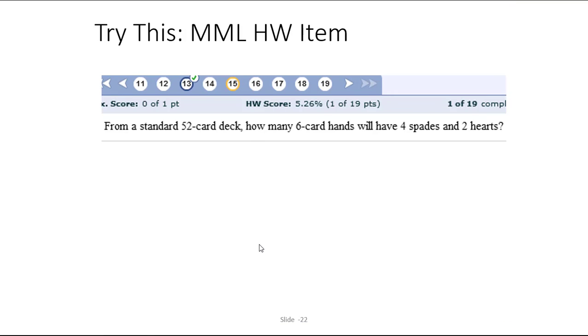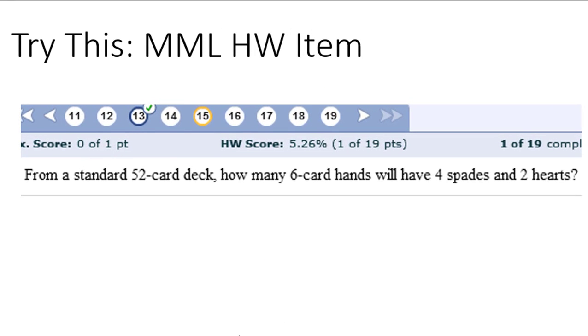This is from our My Math Lab homework in my class. From a standard 52 card deck how many six card hands will have four spades and two hearts. As soon as you see that we're talking about dealing hands of cards what should pop into your head is that it doesn't matter the order that I hold the cards in my hand. Hands of cards are a combination situation. However, we also have two categories of types of cards that we're selecting. We're going to select four spades and then we're going to also select two hearts. Whenever you have categories like that, different categories implies fundamental counting principle.